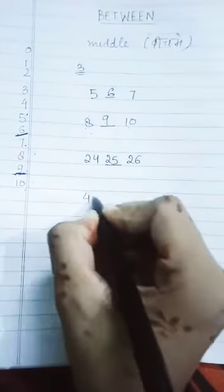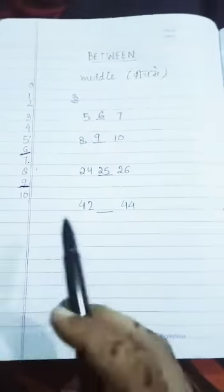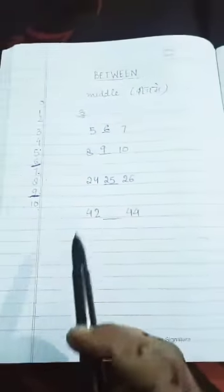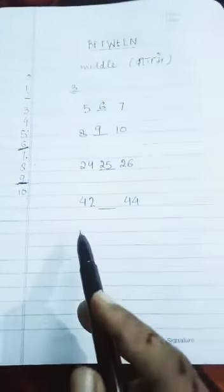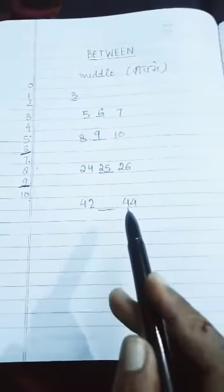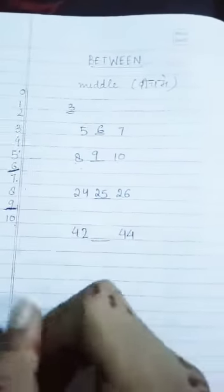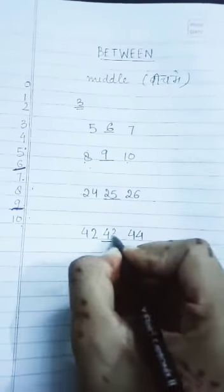If we take one more example, let us consider the number forty-two and forty-four. Now we will again read from forty. So after forty, it is forty-one, then forty-two, then forty-three and forty-four. So what did we get? We got that in between forty-two and forty-four, the number is forty-three.